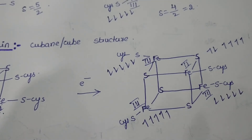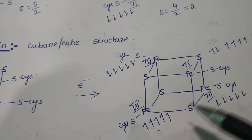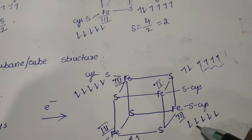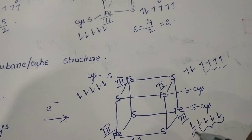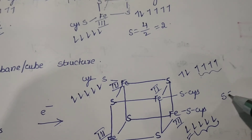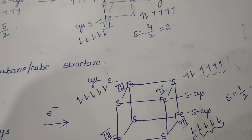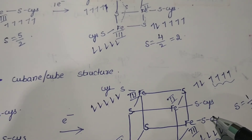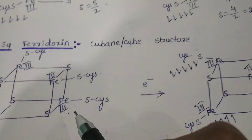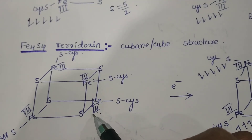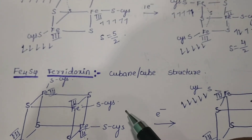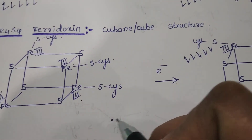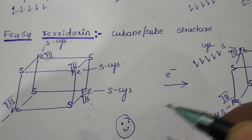The four electrons of the three Fe3+ ions cancel, and one electron remains, so S is equal to one-half. This is the reduced form of Fe4S4, while the other is the oxidized form of Fe4S4. These are the structures of ferredoxin. If you like my channel, please subscribe. Thank you.